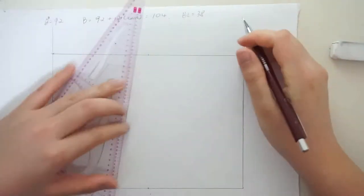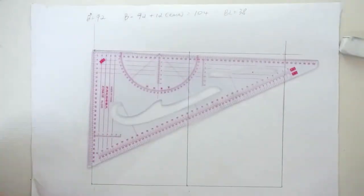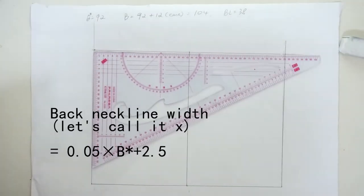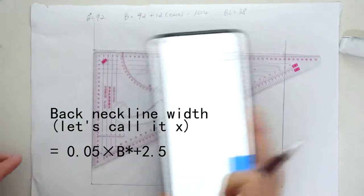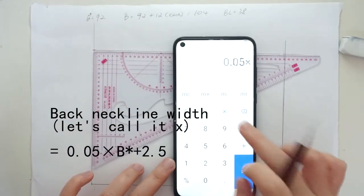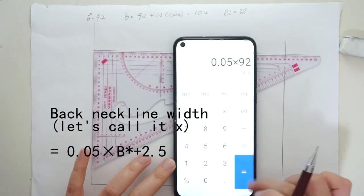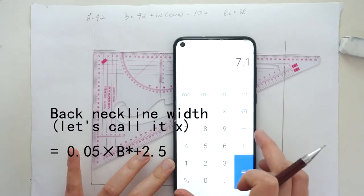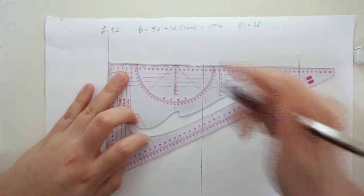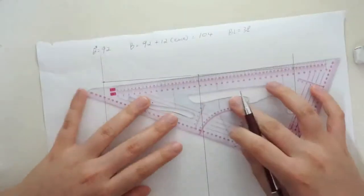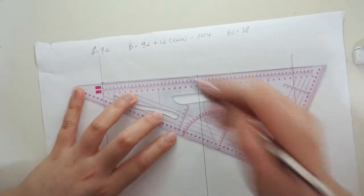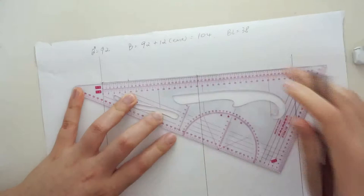Now we split it in half by finding and connecting the midpoint on the length. Afterwards, we can start constructing the back neckline. First, the width is calculated by 0.05 times B star, adding 2.5cm. We will define it as x and use it later in other measurements. It is quite a lot of math, but you just have to do it once and you can save the pattern forever, so it's kind of worth it.